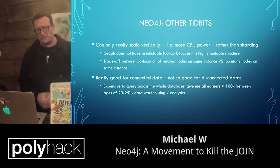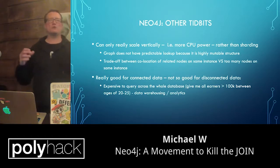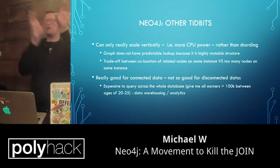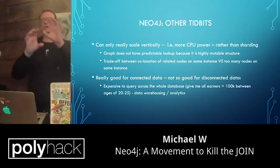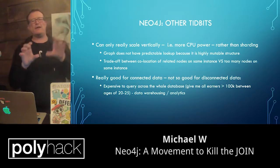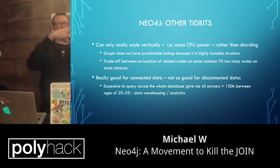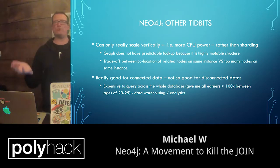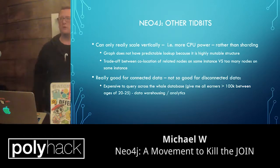A few other tidbits: you can only scale it vertically, really — you cannot scale it horizontally. The reason why is because of the nature of graphs. Graphs basically do not have a predictable lookup, because when you're looking up through graphs, if you know about graph theory, you're really looking at sub-graphs and you can't really predict where it is that you're looking. And there's a trade-off between the collocation of related nodes on a particular physical location versus the amount of nodes that you want to have on there, which is also kind of unpredictable. So it can really only scale vertically, which basically means that if you're using a graph database, you're going to be probably using one server with more and more power as it's actually required.